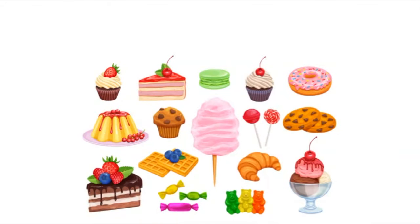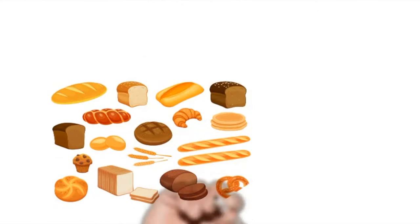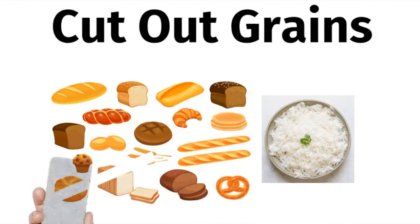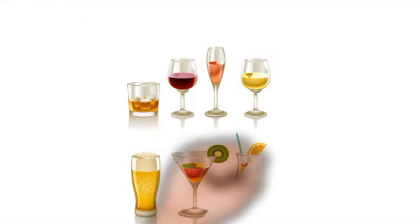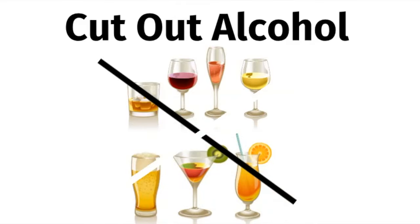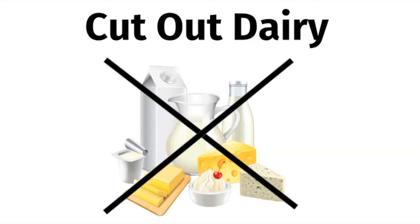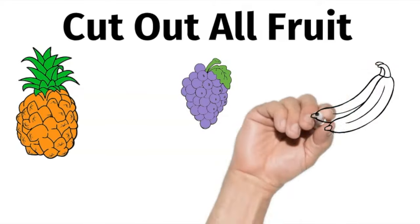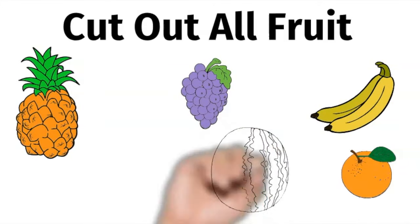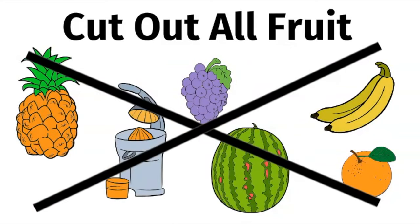Let's review the Candida SIFO diet once more. You have to say goodbye to all refined sugar. Next, cut out grains, which include bread, pasta, cereals, even rice, because these turn into sugar which yeast love. Say goodbye to your nightly cocktail, because wine, beer, and hard liquor are all fuel for yeast to grow. Dairy products have the milk sugar lactose, so I also recommend avoiding all dairy products when treating Candida and SIFO. You also want to cut out all fruit, because fruits and fruit juices have the sugar fructose. I recommend strict avoidance of fruit for the first month of treatment, then you can add back low-glycemic index fruit like berries and apples.